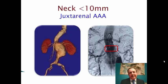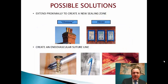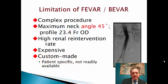What if the neck is less than 10 mm? We have two options. Either we increase our sealing zone by using a chimney, PVAR, or FEVAR, or the other option is to create an endovascular suture line by using endo anchors. Of course, the best option is to use PVAR or FEVAR.